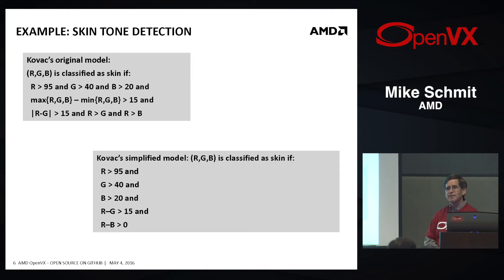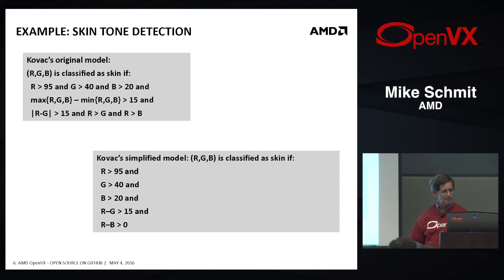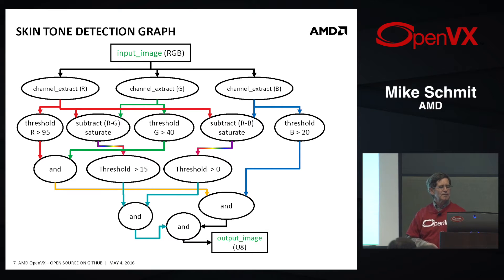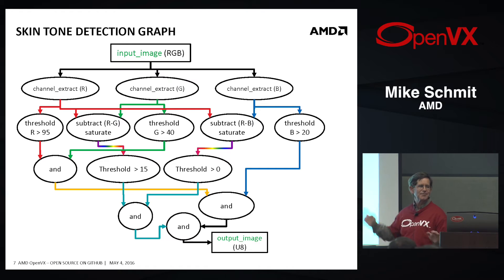Here's an example of skin tone detection. Without worrying too much about the math, we basically took this arithmetic and put it into a graph. The color codes are just there to help — you can see where the red, green, and blue go, but you can ignore the exact colors.